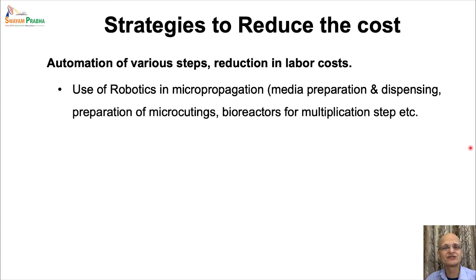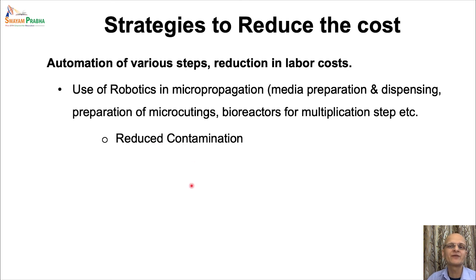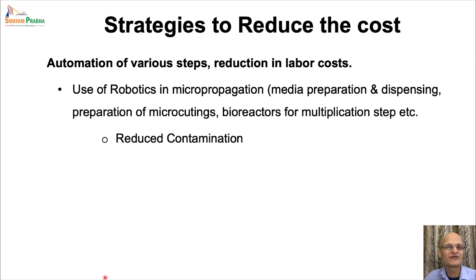Use of robotics not only reduces labor cost but has several other advantages. First, it reduces contamination, since contamination associated with people is usually more than with machines and is easier to control from machines. However, a downside is that if contamination does occur in robotics-managed cultures, there is less opportunity to detect it at early stages, and by the time it is detected it may result in significant losses. Robotics also provides better management — machines are much easier to manage than human resources — and enables multiple operational shifts more easily than human-dependent labor.